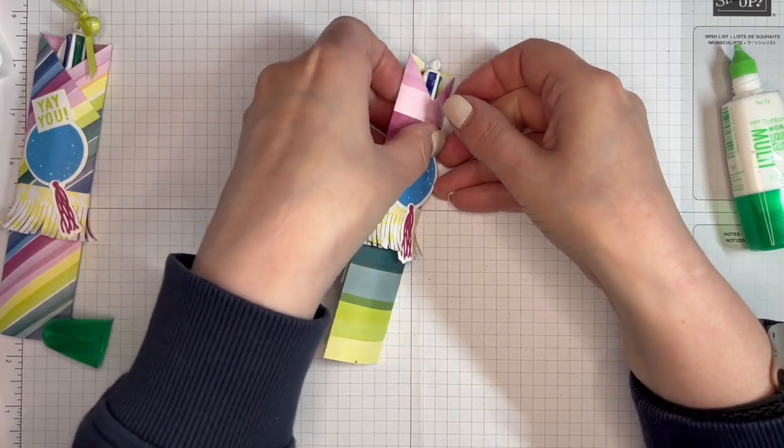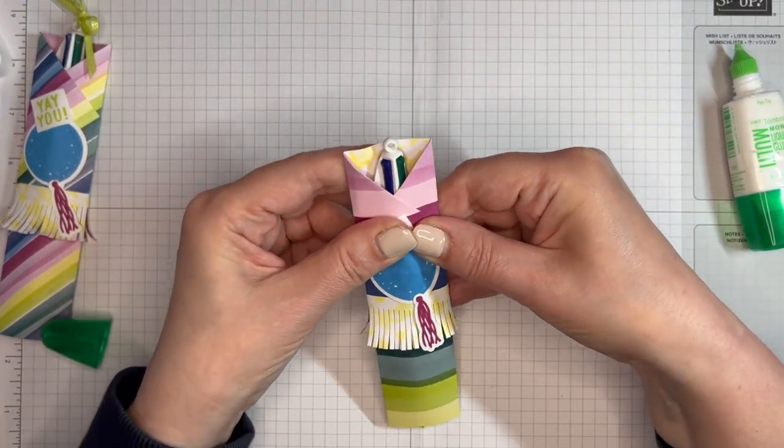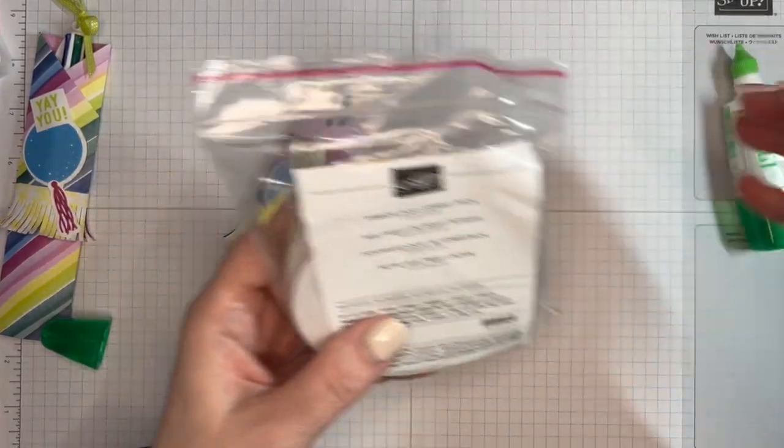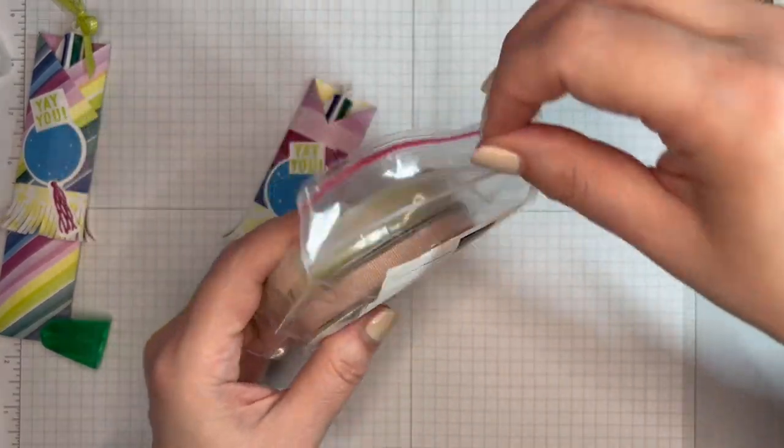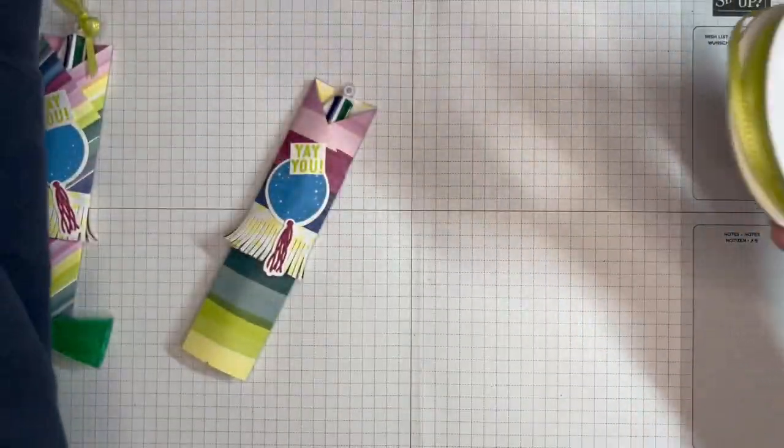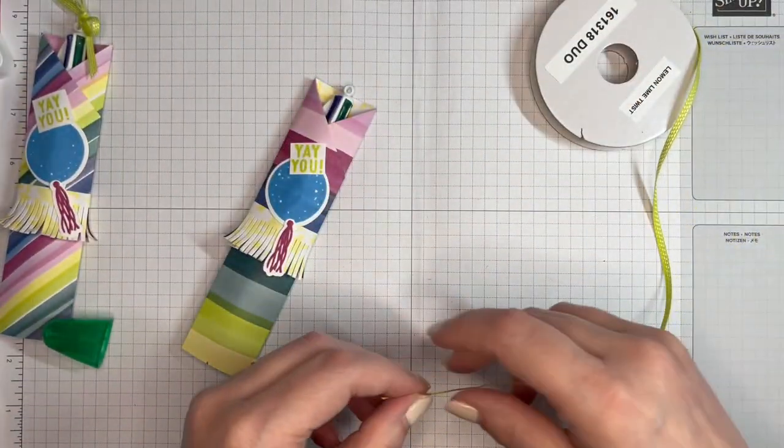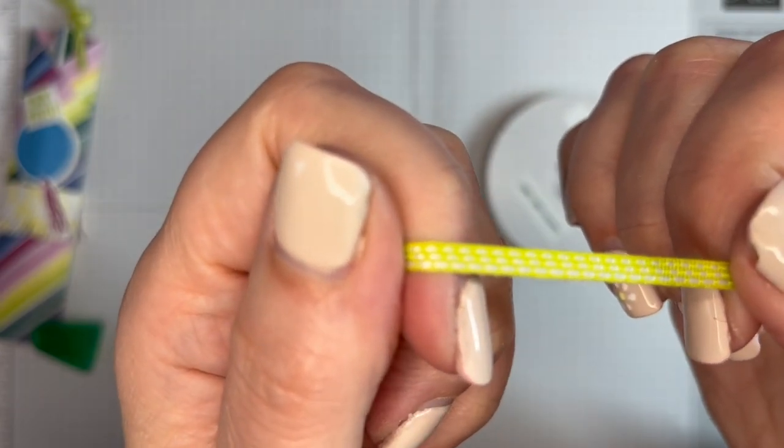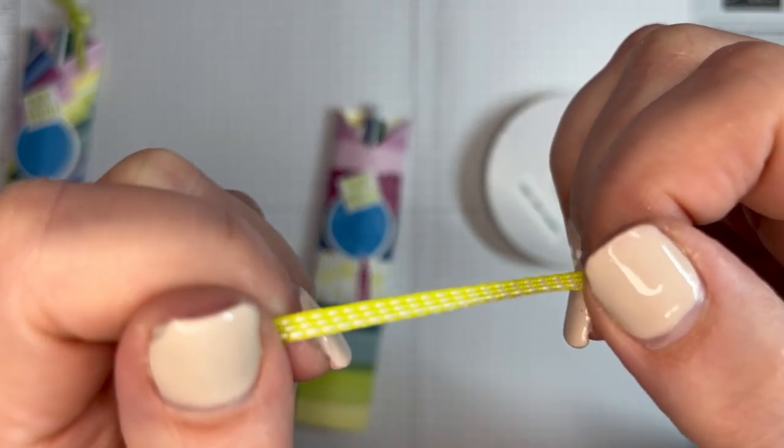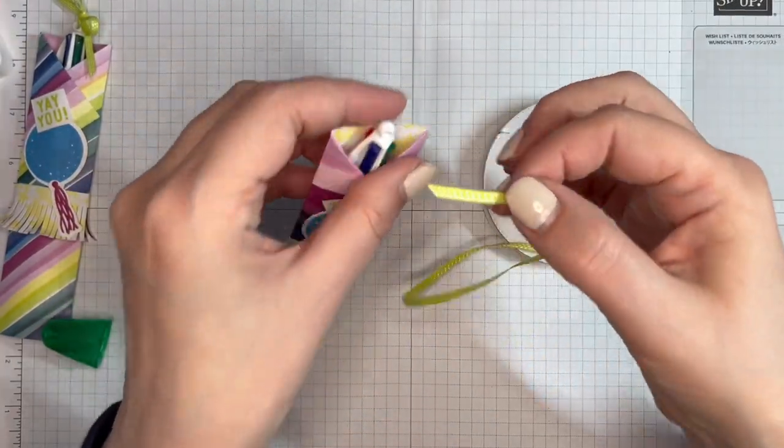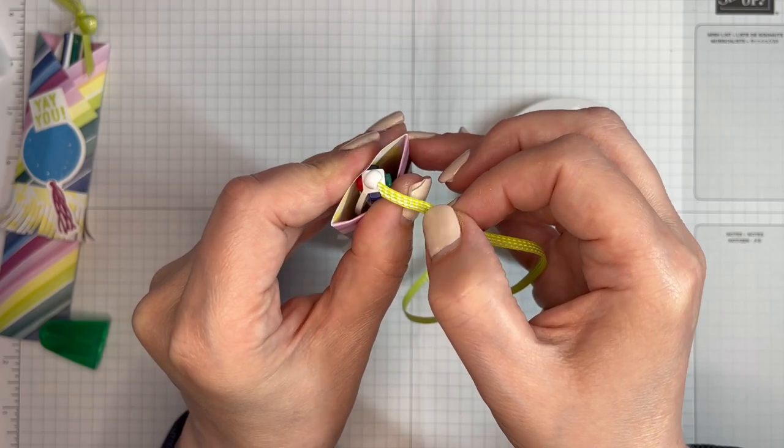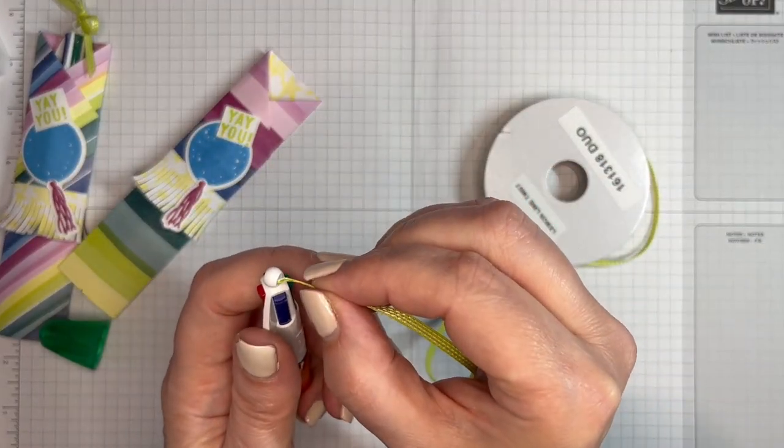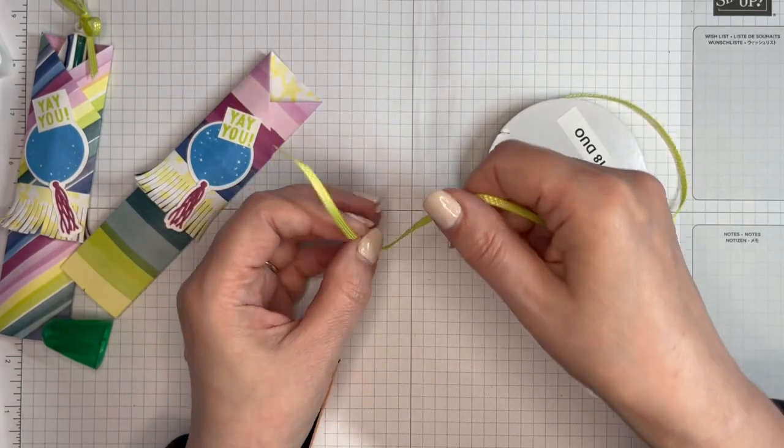And my finishing touch was to add a little bit of ribbon on that little hook there. Now this ribbon is actually from a different suite, it's from the Zoo Crew suite, but it does have Lemon Lime Twist which is just gorgeous and it's a beautiful thin ribbon there with little stitching on it. Pop that through, she says hopefully. It'd be easier if I take it out. Pop that through and then just tie it in a little bow.